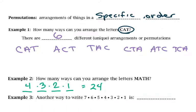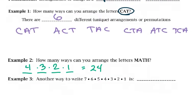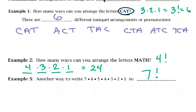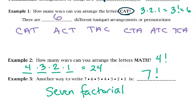This is called the fundamental counting principle and it's a way to do a simple permutation. You may know this already, but another way to write seven times six times five times four times three times two times one is seven factorial — when you have seven and an exclamation point, that's what it means in math; it's not just an excited seven. So four factorial is how many ways you can arrange the letters in math, and three factorial equals six for the word cat. Factorials are a shortcut instead of having to write everything out.